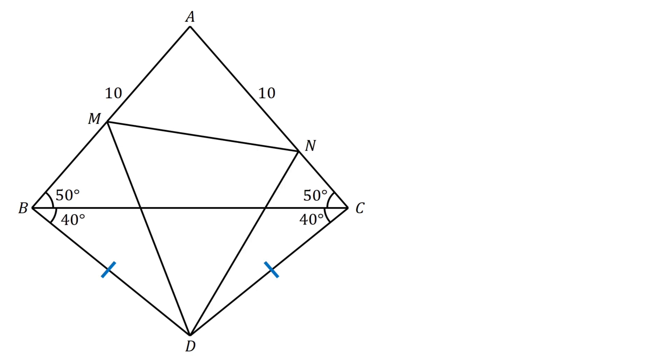MDN is a third triangle with vertices M and N lying on AB and AC respectively. Given that angle MDN equals 50 degrees, our goal is to find the perimeter of triangle AMN.